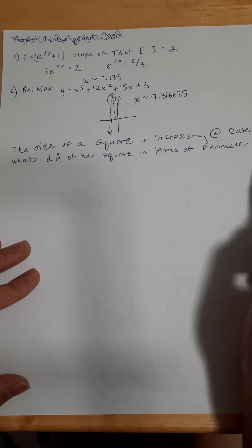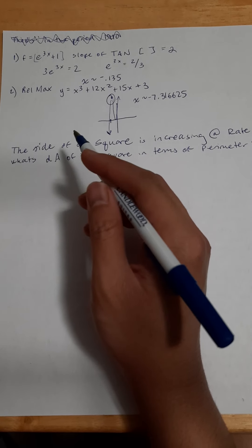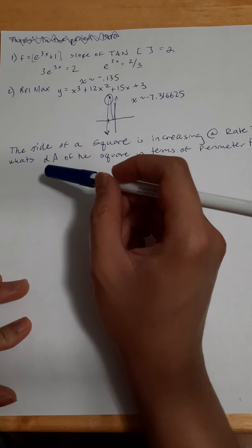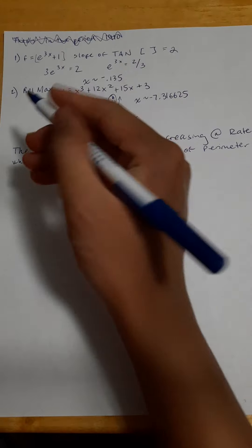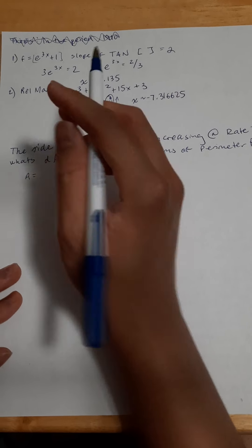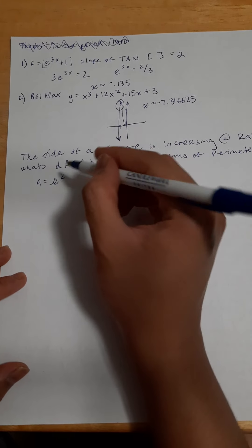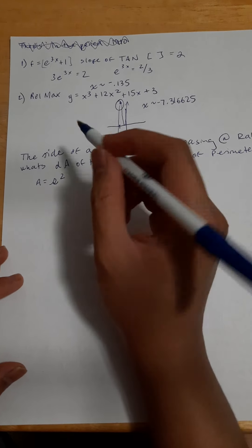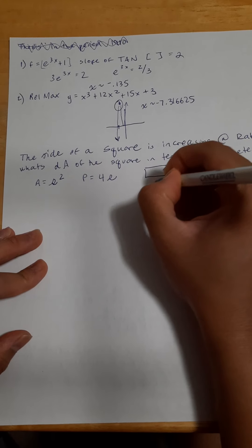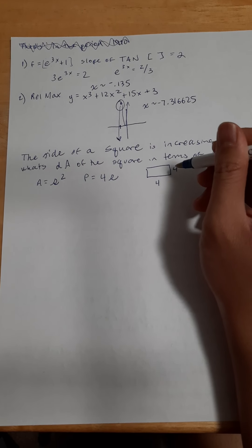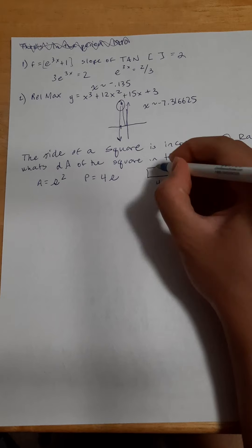So what we have here, again the equation from the question, and we need the rate of change. The area of a square is s² — I'm using cursive S because it might look like a 5 and I don't want to confuse anyone. The perimeter of a square is P = 4s, because if we have a square where each side is 4, the perimeter is going to be 16, because we multiply that one side by 4 since all sides are congruent.